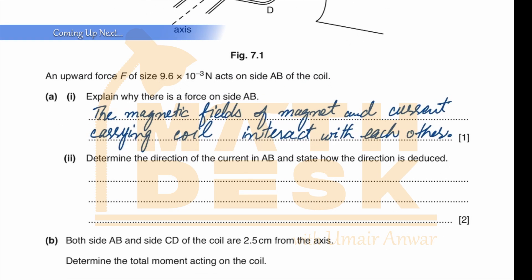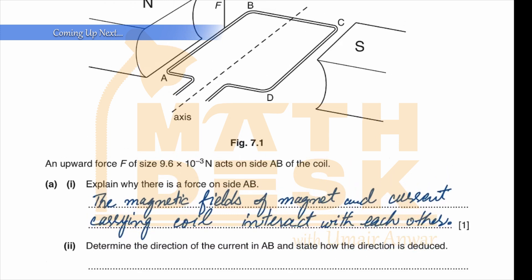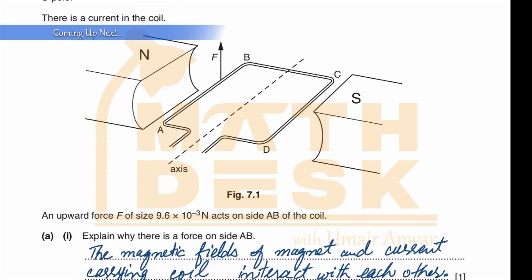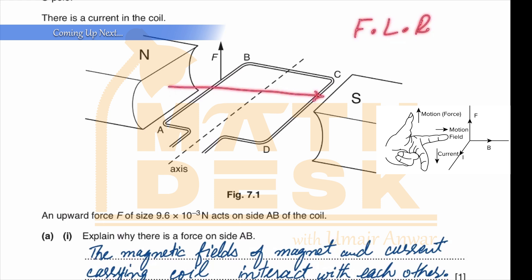To determine the direction of the current in AB and state how the direction is deduced, we use Fleming's left-hand rule. According to Fleming's left-hand rule, the first finger is aligned with the direction of the magnetic field, the thumb is aligned with the direction of the force acting.